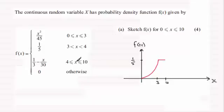And then what we've got here is a straight line with a negative gradient. When x is 4 I can see that I get 1 third minus 4 thirtieths. And if you work that out that is 1 fifth. So I know that it joins onto here.